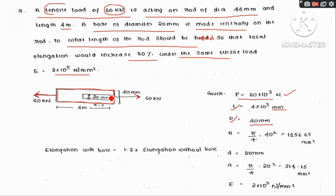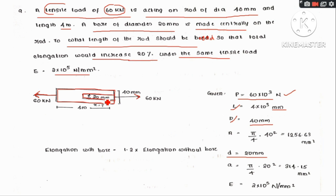A hole of diameter 20 mm is made centrally on the rod. The inner diameter d is 20 mm. We need to find what length of the rod should be bored so that the total elongation would increase 20% under the same tensile load. We choose the unknown length x to find out.